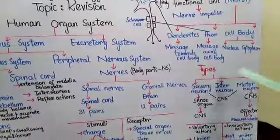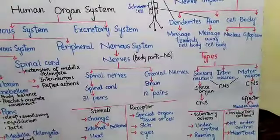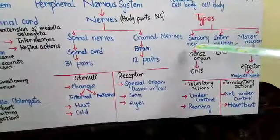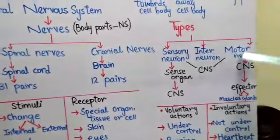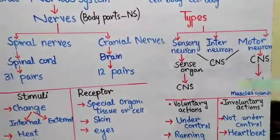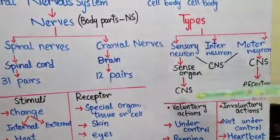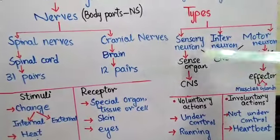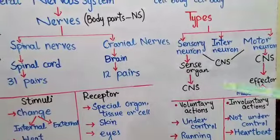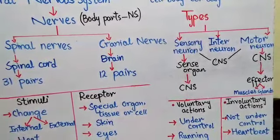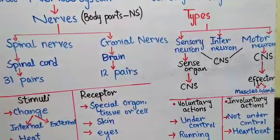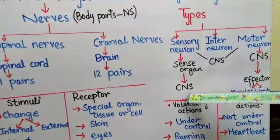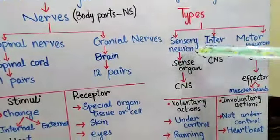Now let's move towards the types of neurons. There are three types of neurons: sensory neurons, inter-neurons, and motor neurons. Sensory neurons take nerve impulses from the sense organs to the central nervous system. The sense organs include eyes, nose, skin, and ears — all the sense organs send nerve impulses via sensory neurons.